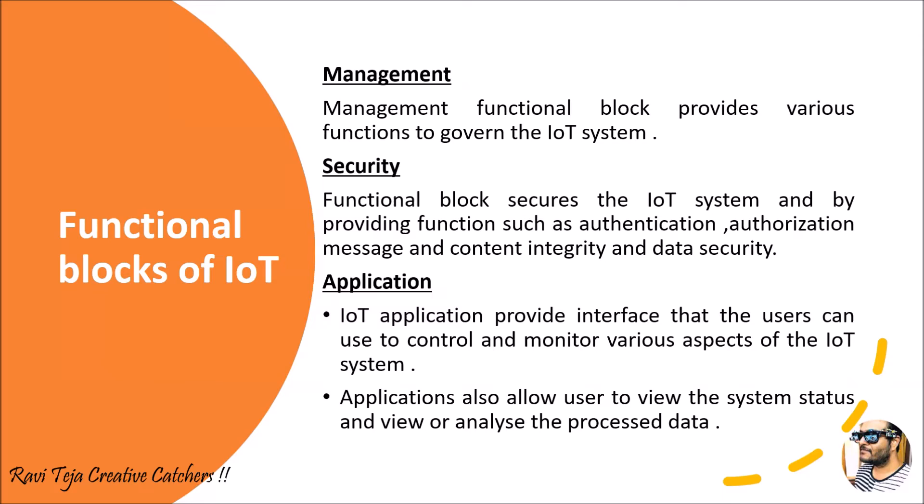Coming to security: security nowadays plays an important role as we are using and manipulating these devices using the internet. The functional blocks of IoT need to take an important step in providing authentication, authorization, content integrity, as well as data security. They need to provide authentication and authorization in the form of OTPs or passwords, and they should also protect the data being processed. Security plays a key role in the Internet of Things.